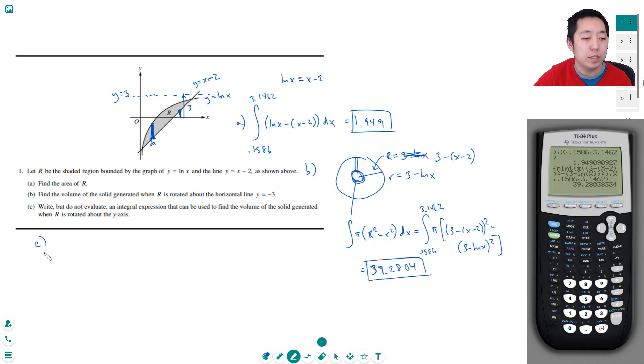Part C: Write but do not evaluate an integral expression that can be used to find the volume of the solid generated when R is rotated about the y-axis. So this time I'm going to rotate it around the y-axis, and there's two ways to do this. One I like: my representative rectangle, if it sweeps around the y-axis, it makes a shell, right?